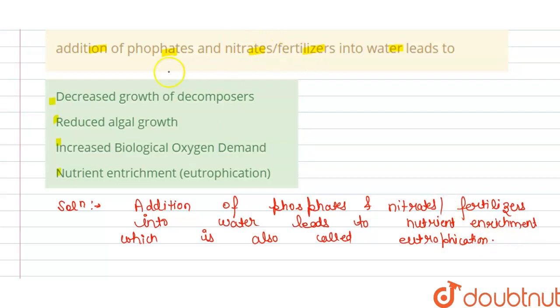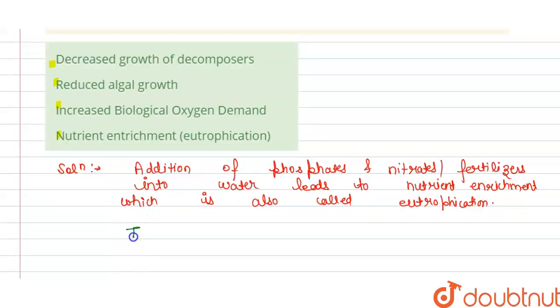So by adding the phosphorus, phosphates and nitrates, it will lead to nutrient enrichment and the enrichment of the water bodies with excessive nutrients. So this is a kind of water pollution and it leads to increased growth of